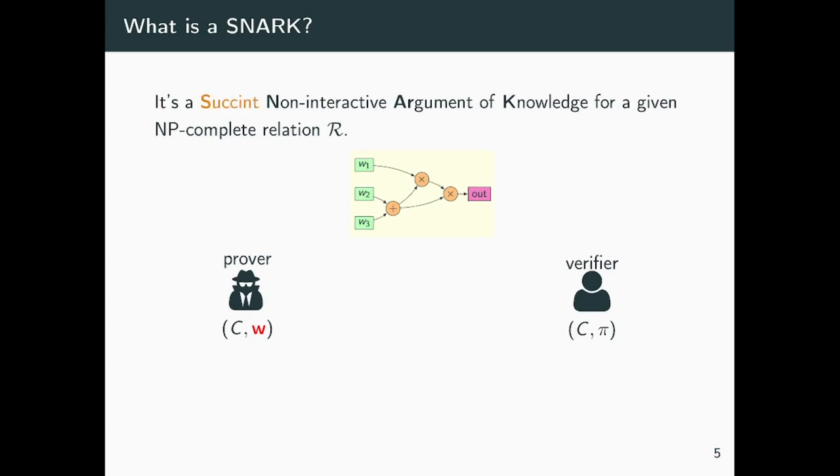Furthermore, in order to have a SNARK that is essentially a Succinct Non-interactive Argument of Knowledge, we also want the argument to be succinct, meaning that the length of the proof should be significantly smaller than the size of the circuit and of the witness, ideally polylogarithmic or constant.